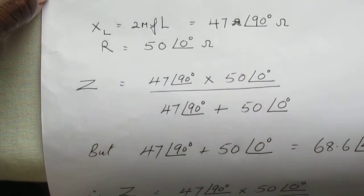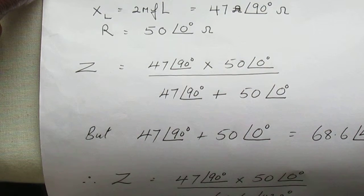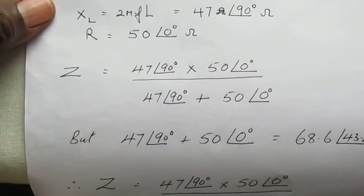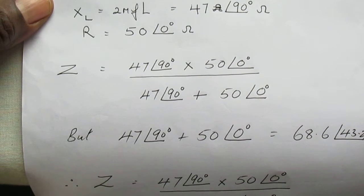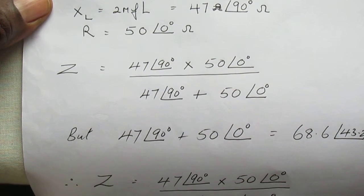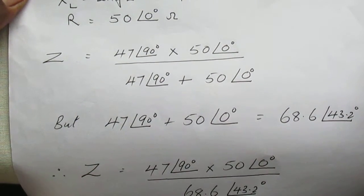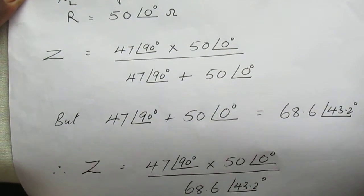But from your previous work on the series circuit, you should easily be able to calculate that 47 angle 90 plus 50 angle 0 is equal to 68.8 angle 43.2 ohms.